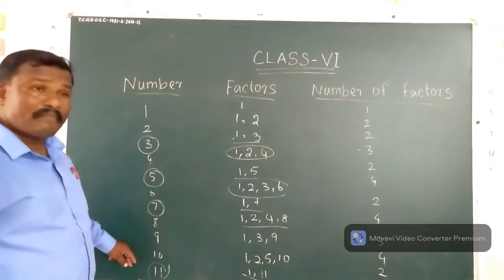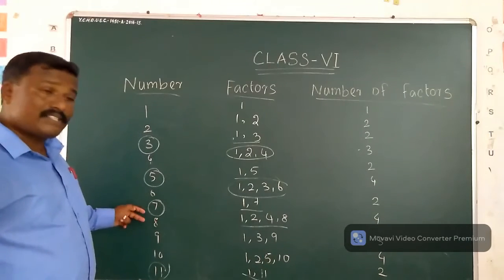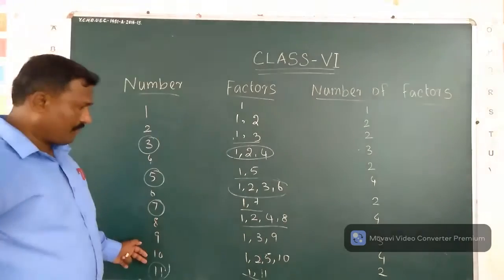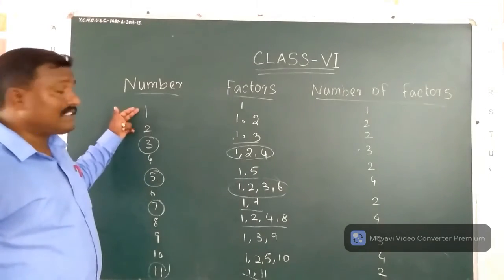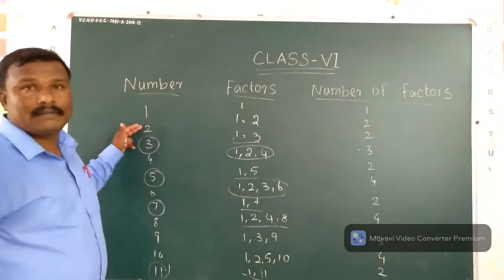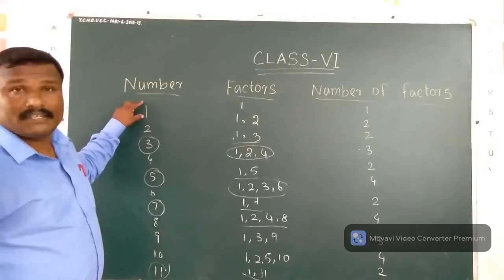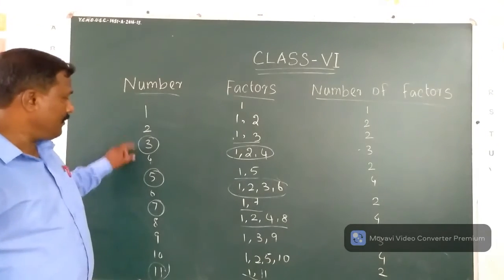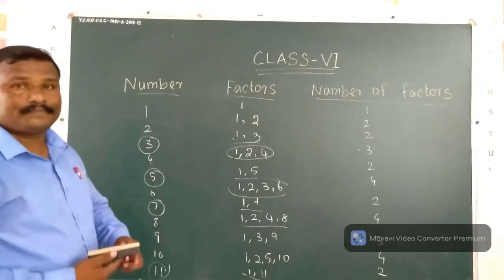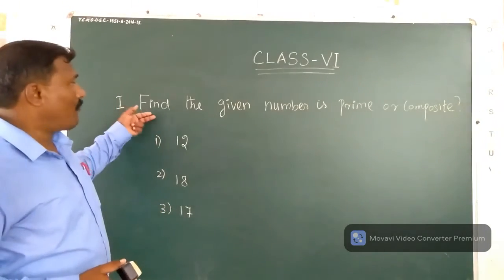From 1 to 10, the prime numbers are 3, 5, and 7 — only three prime numbers. The composite numbers are 4, 6, 8, 9, and 10. The number 1 is not a prime number and not a composite number. The number 2 is the even prime number — it is the only even prime number. Then 3, 5, 7 are all prime numbers, and 4, 6, 8, 9, 10 are all composite numbers.